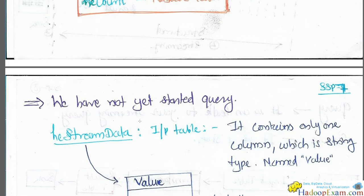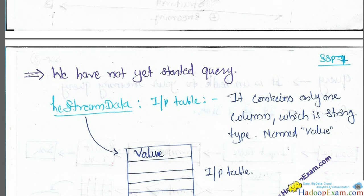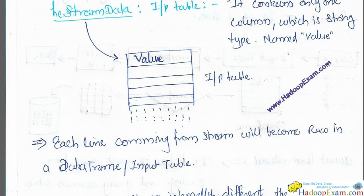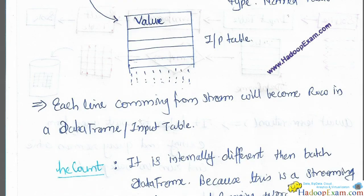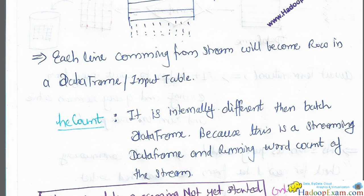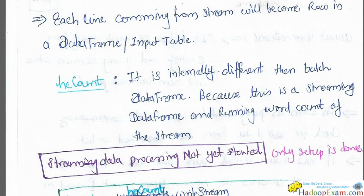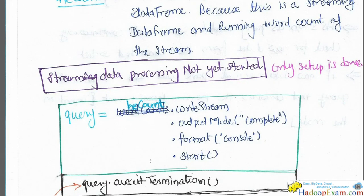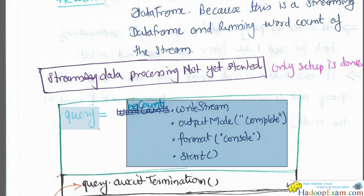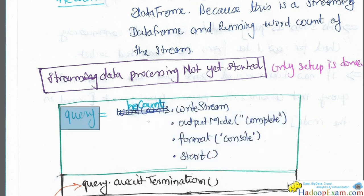This `heCount` is my result table, because I want to save it to some destination. In our example, data goes from source into the input table, we apply transformations to generate the result table, and then the result table is saved into the sink. This generates a running word count, which is your result table. We have not yet started the query — as mentioned previously, until and unless we call the start action, processing does not begin. `heStreamData` input table contains only one column of string type named `value`.